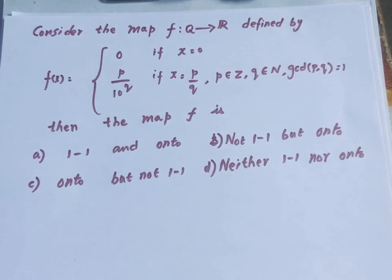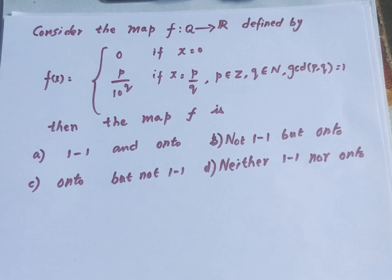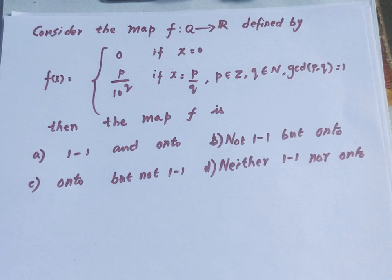Welcome to Kamal Online Max. In this video, we will have a real analysis question. Consider the map f from Q to R — the set of all rationals to the set of all reals — defined by f(x) = 0 if x = 0, and if x = p/q, then f(x) = p / 10^q, where p is an element of Z, q is an element of N, and gcd(p, q) = 1.